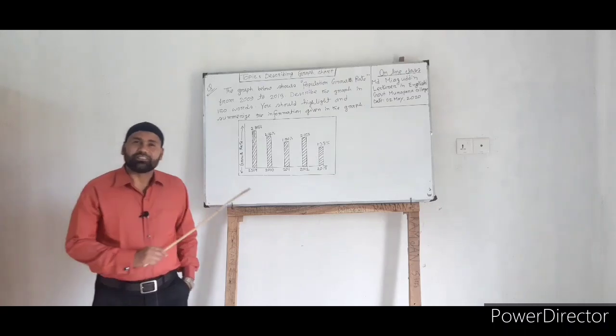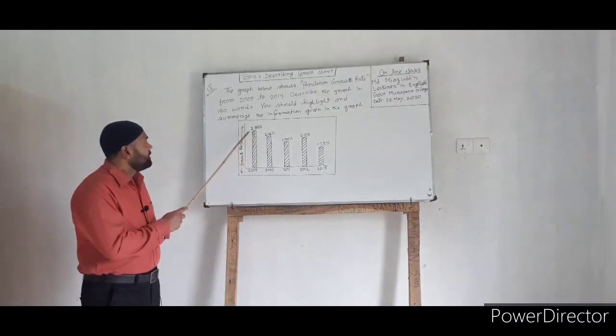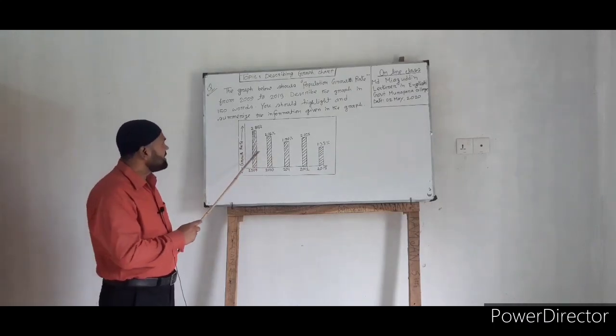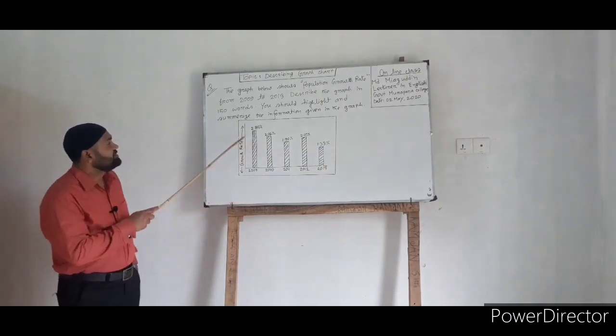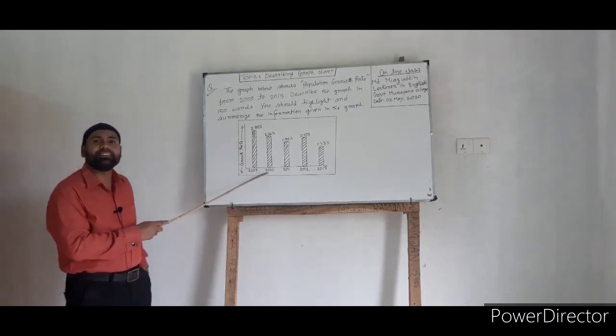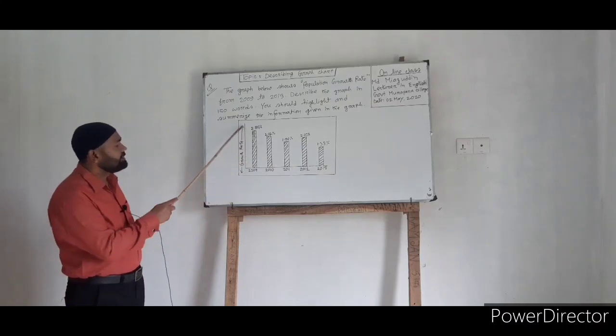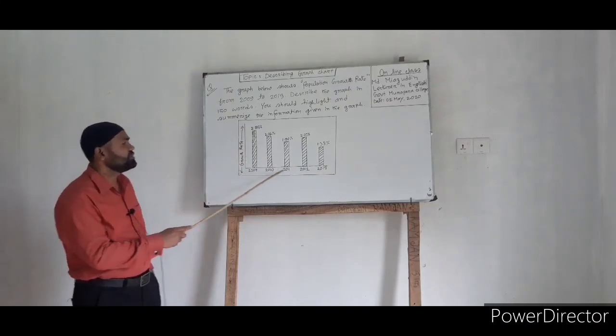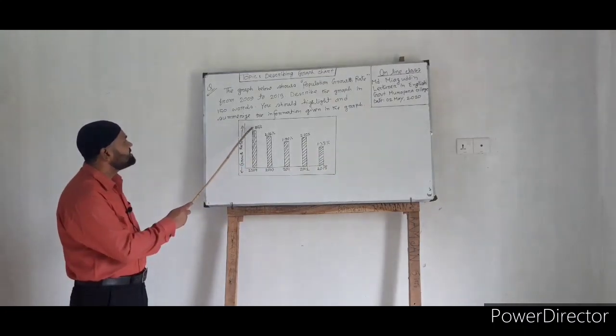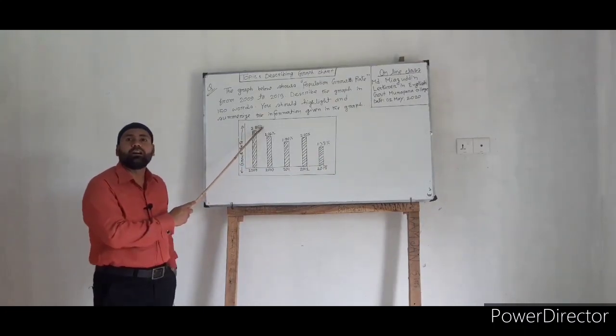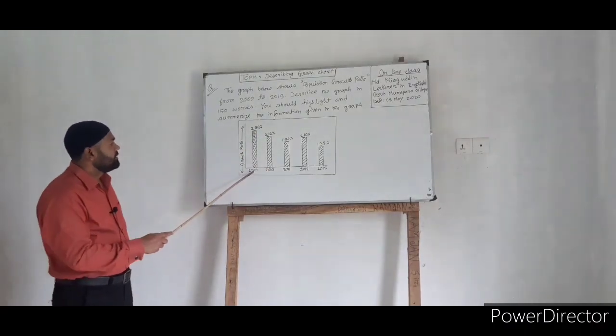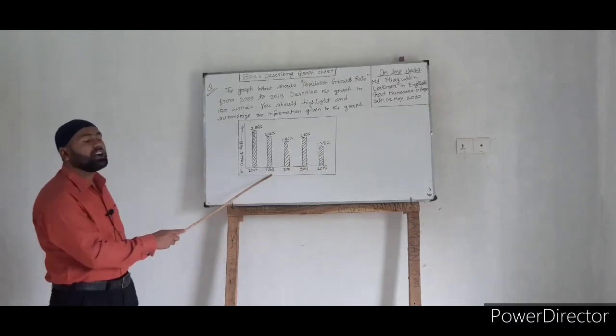Let's explain the chart. We can start the first stage in this way: This is a bar chart. Here are two lines in the chart, one is vertical line and another is horizontal line. The vertical line shows the percentage of the growth rate of population. On the other hand, the horizontal line shows the time.